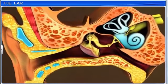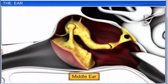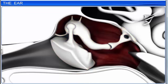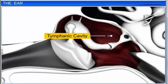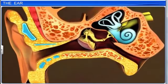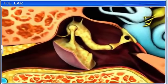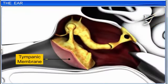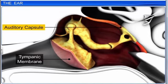The meatus further extends into the middle ear. The middle ear consists of an air-filled space called the tympanic cavity, that separates the outer and inner ears. The tympanic cavity is bound externally by the tympanic membrane, also known as the eardrum, and internally by an auditory capsule.